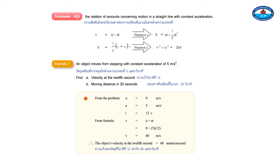Example 7: An object accelerates from a stop with a constant acceleration of 5 meters per second squared. Find: a) velocity at the 12th second, b) moving distance in 20 seconds. The object's velocity at the 12th second equals 60 meters per second.